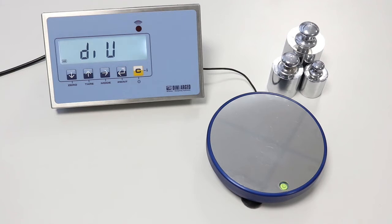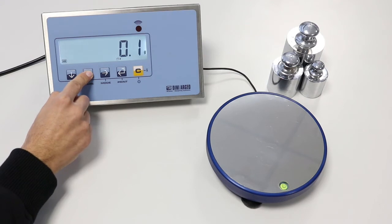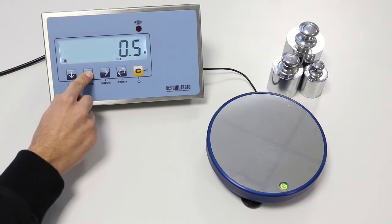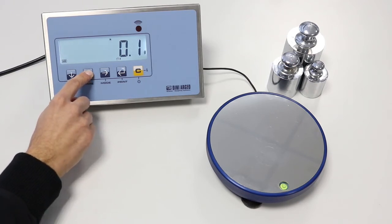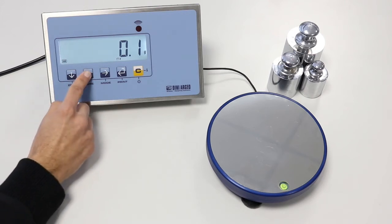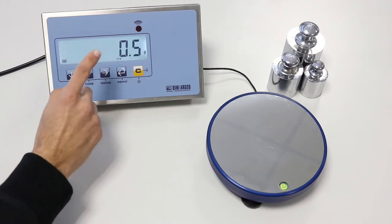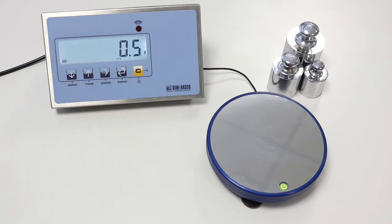Next step is DIV, the minimum division of the scale. Using TER, you scroll through possible settings. For multi-range scales, we set the division of the first range, then the division of the next ranges will be set automatically. For our example, we set 0.5 grams for the first range, so automatically the division of the second range will be 1 gram.